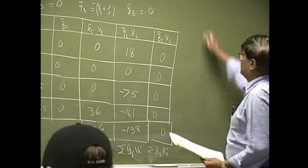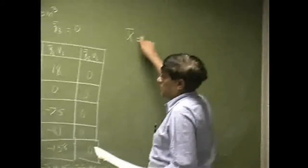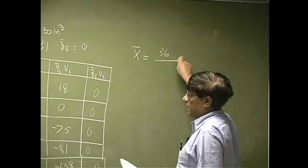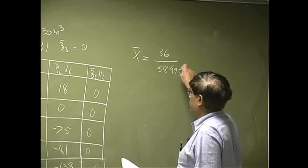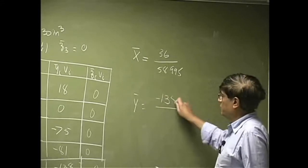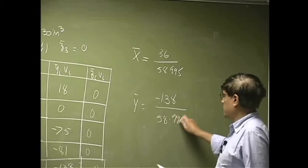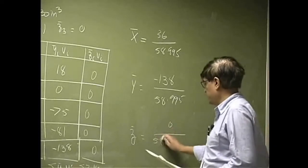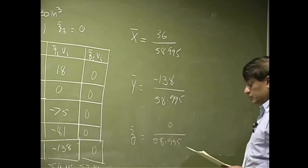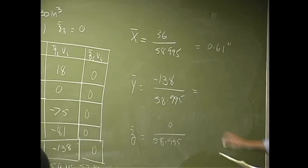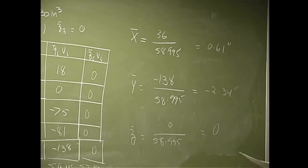So we have everything we need. X bar will be this number here, that's 36, you divide it by 58.995. Then you have Y bar, that's negative 138 over 58.995. Then you have Z bar, that's zero over 58.995. This one here will be 0.61 inches. This one's going to be negative 2.34 inches. And this one will be 0.